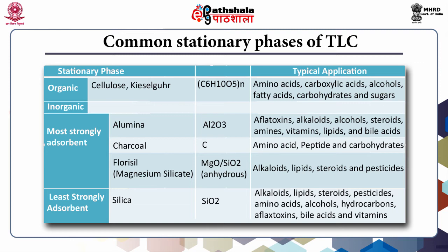The inorganic stationary phase is divided into most strongly adsorbent and least strongly adsorbent types. Most strongly adsorbent examples include alumina, charcoal, and florisil, used for identification of aflatoxin, alkaloids, vitamins, amino acids, peptides, carbohydrates, lipids, and pesticides. The least strongly adsorbent example is silica, used for identification of steroids, amino acids, hydrocarbons, bile acids, and vitamins.